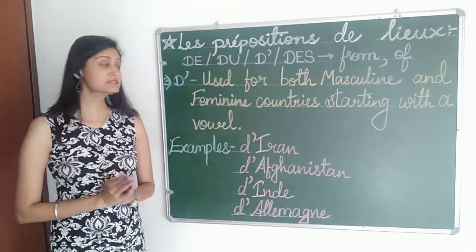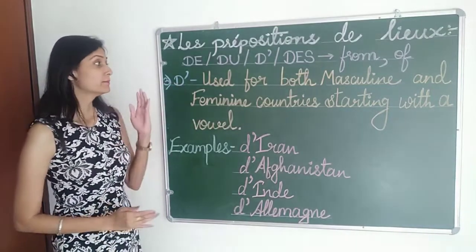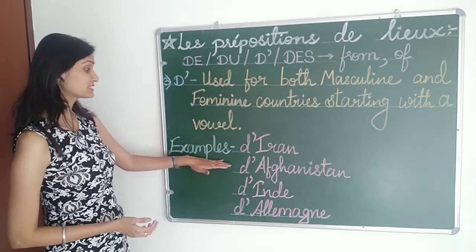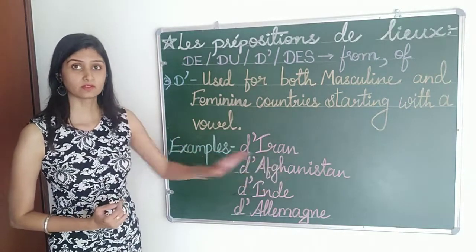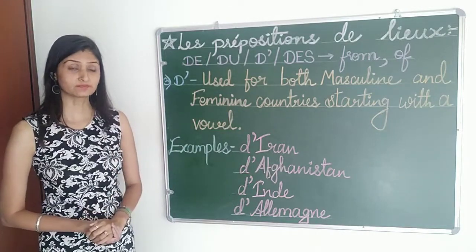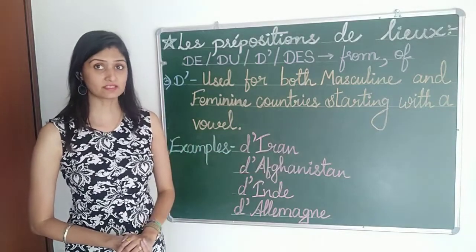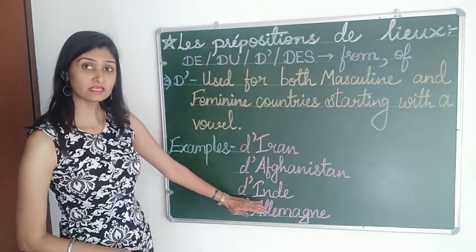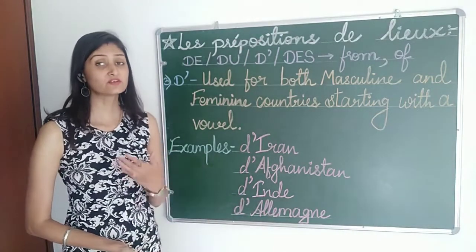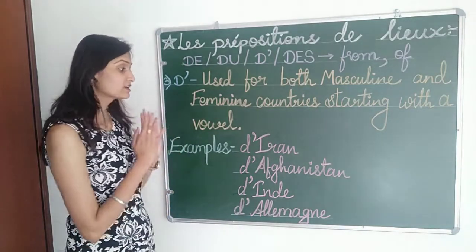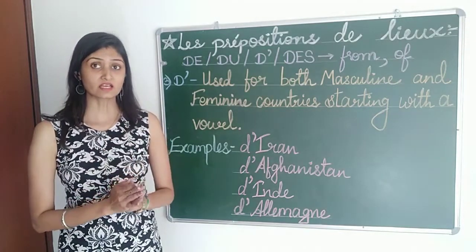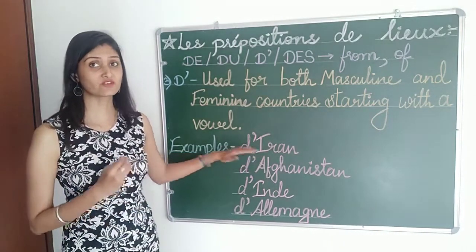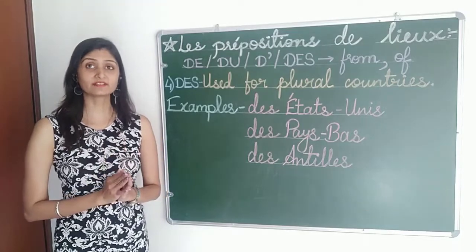The next preposition is d'apostrophe. It is used for both masculine and feminine countries starting with a vowel. For example, d'Iran and d'Afghanistan — both are masculine countries starting with a vowel — meaning from Iran and from Afghanistan. And d'Inde means from India and d'Allemagne means from Germany, which are feminine countries starting with a vowel. So whenever any country name starts with a vowel, whether masculine or feminine, we use d'apostrophe before it.